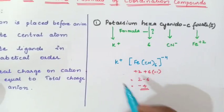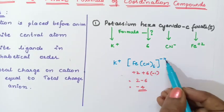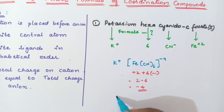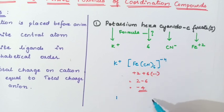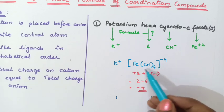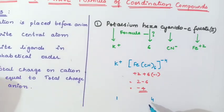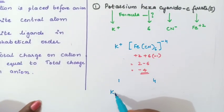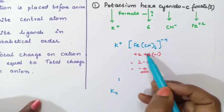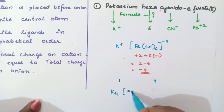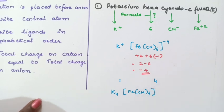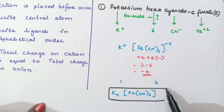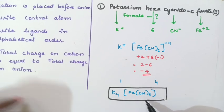So here: +1 on K and −4 on the complex. Write down just the numbers without the charge signs — 1 and 4 — then cross multiply. K × 4 gives K₄, and the bracket with Fe(CN)₆ × 1 stays as is (1 is understood). So the formula of the coordination compound is K₄[Fe(CN)₆]. Understood?